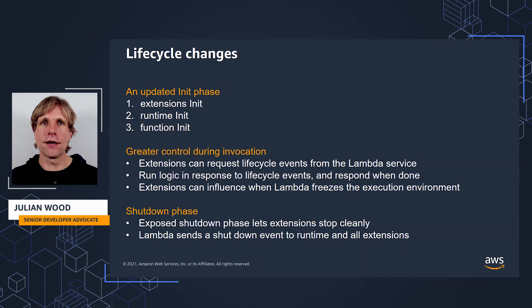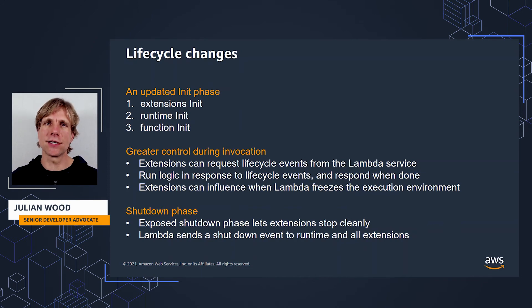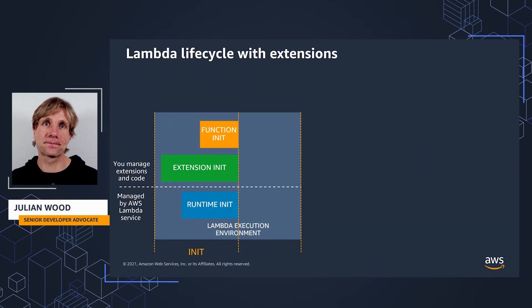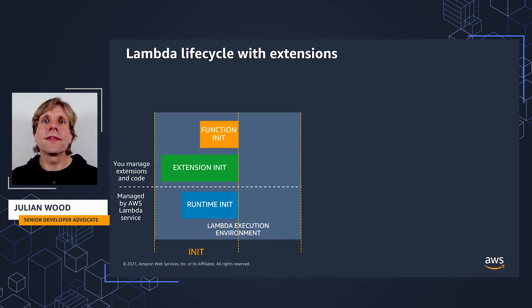We are now also exposing the shutdown phase to let extensions stop cleanly when the execution environment shuts down. The Lambda service sends a shutdown event which tells the Runtime and extensions that the environment is about to be shut down. So let's take a look at what this looks like with a timeline.